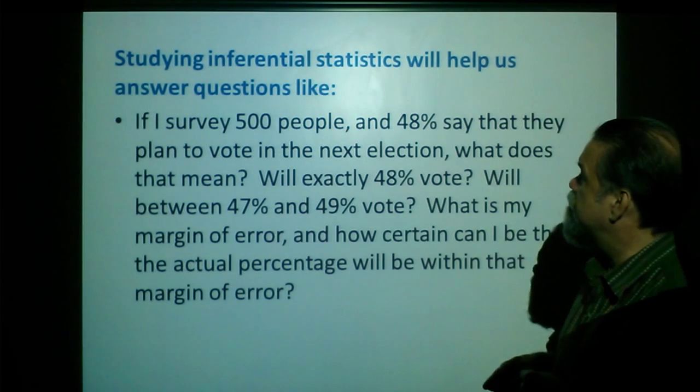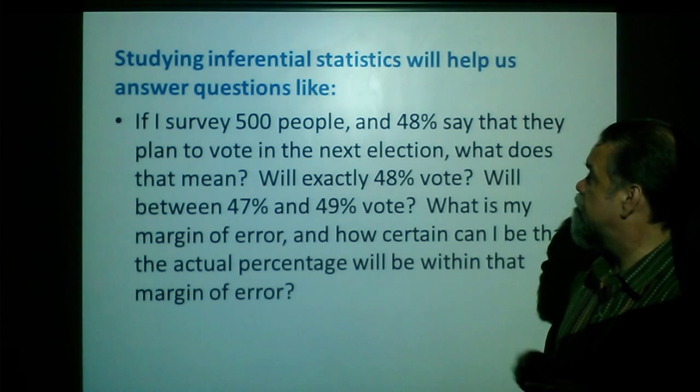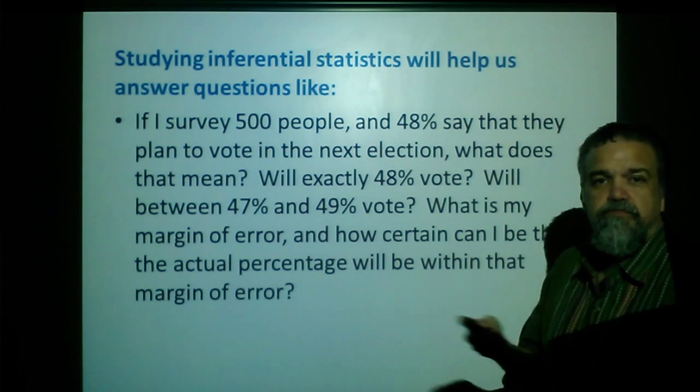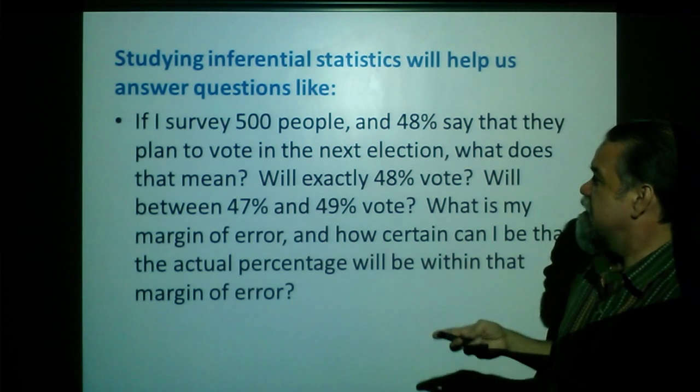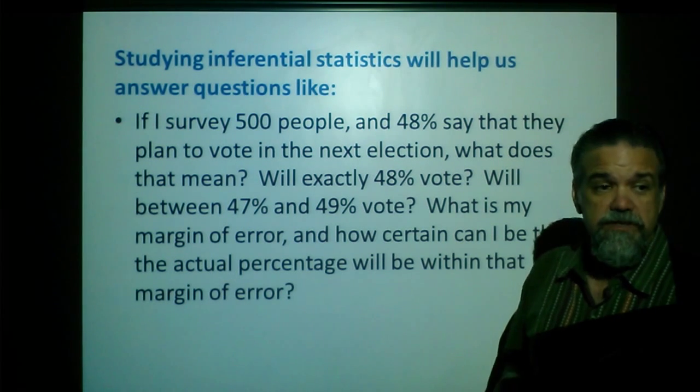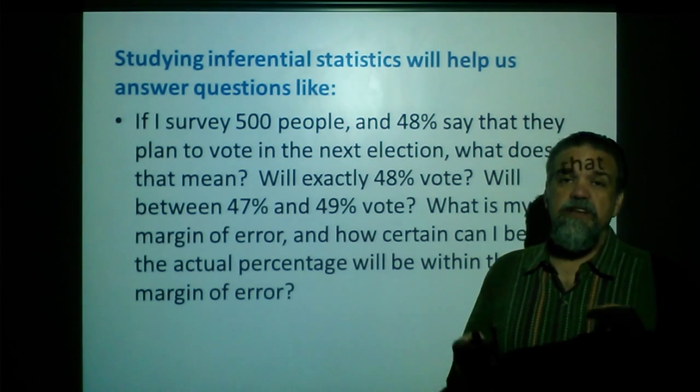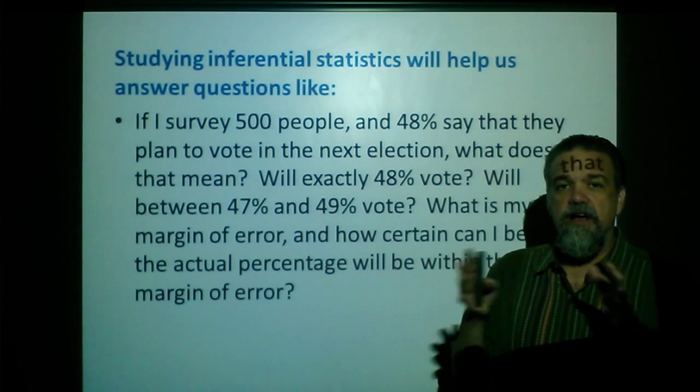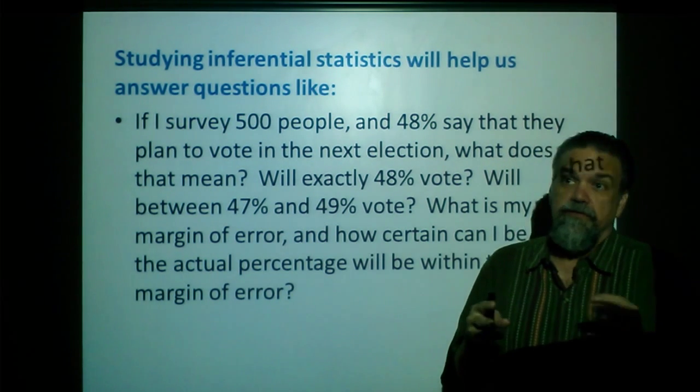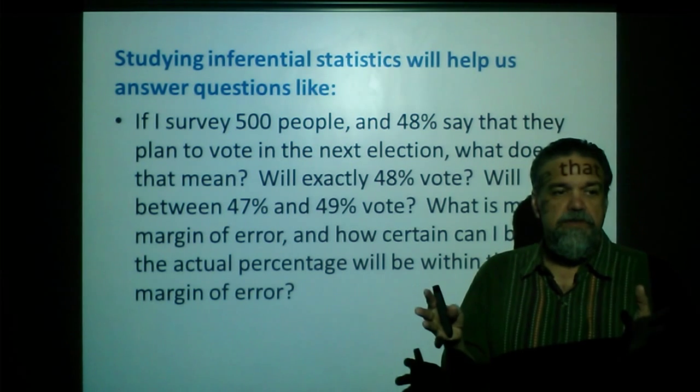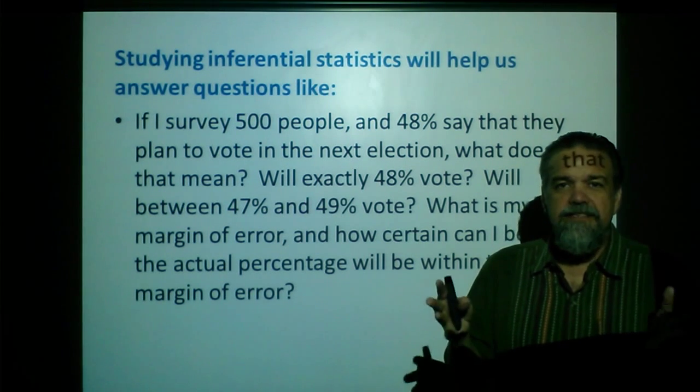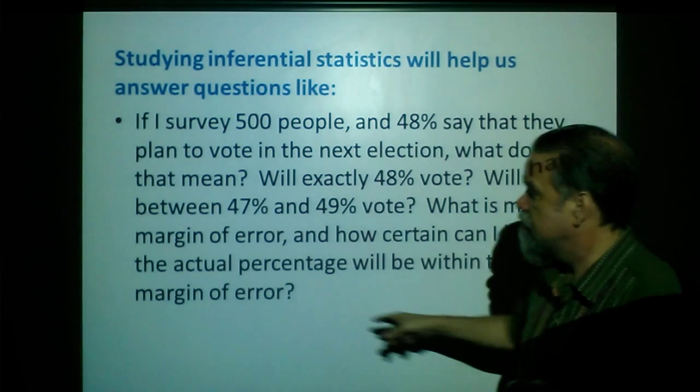How about this one? If I survey 500 people and 48% say that they're going to vote in the next election, what does that mean? Does that mean exactly 48% is going to vote in the next election? Or does it mean, like, between 47 and 49, I might be 1% off? Or maybe, like, between 46 and 50%, I might be 2% off?